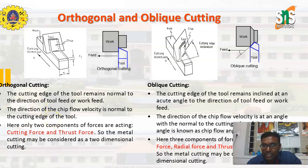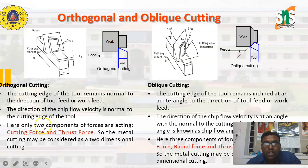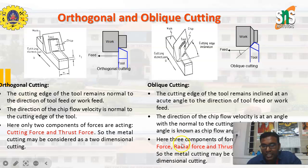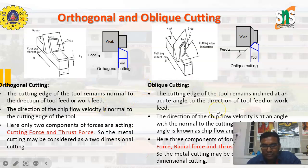Orthogonal cutting is also called 2D cutting because only 2 components of forces are acting: the cutting force and the thrust force. So metal cutting may be considered as two-dimensional cutting. Whereas in oblique cutting, 3 components of forces act on the workpiece and tool: the cutting force, the radial force, and the thrust force or feed force. So metal cutting in this case may be considered as three-dimensional cutting action.